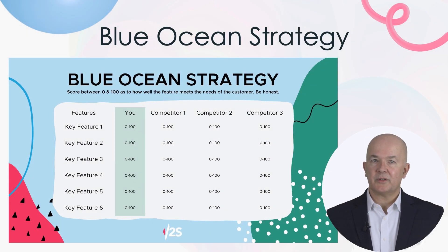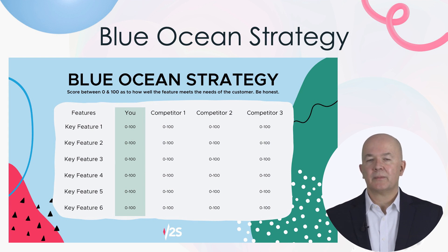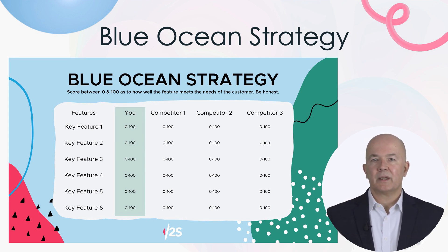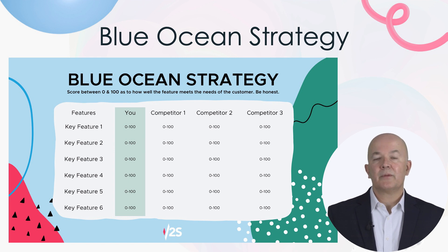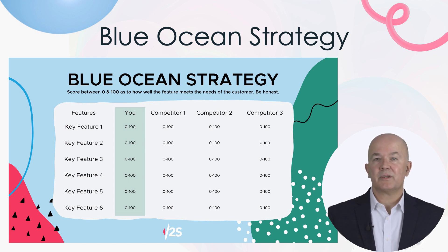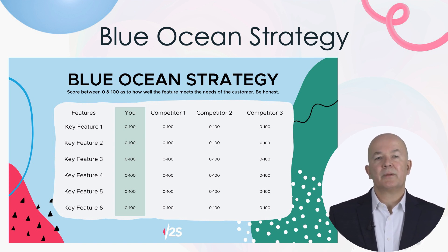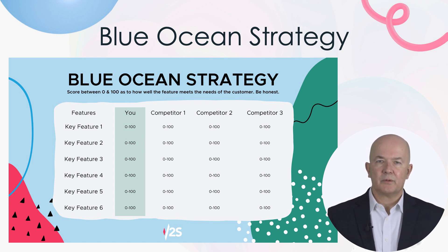To figure out how you answer these questions you can use a standard spreadsheet. In it you have a list of key features running down the left-hand side of the sheet, and along the top you have your company as well as your competitors. The features on your sheet are the factors that you and your competitors are competing on. Then give yourself and your competitors a score between 1 and 100 for how well each feature meets the needs of your customers. Please be honest with yourself — it's unlikely you will be 100% at everything and that your competitors are really bad at everything. The more honest you can be, the better the analysis.